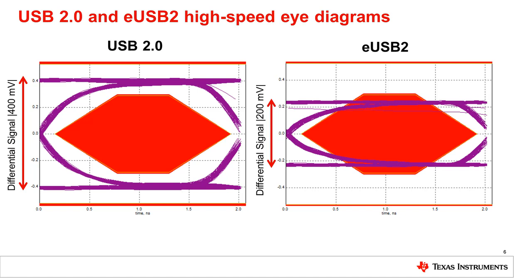But eUSB2 has about half the differential amplitude of USB 2.0. What about that stray line bisecting the mask on the eUSB2 eye? It is caused by the longer end-of-packet width when a test packet is sent through a repeater or a hub. We'll talk about that more when we get into compliance, but it is expected. If you'd like more information on eye diagrams and what can impact USB eye diagrams, please check the links at the end of the presentation.